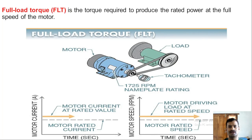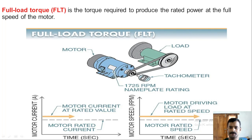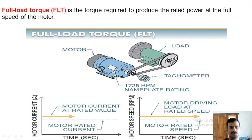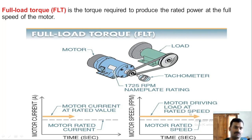Full load torque is the torque required to run the motor at rated power and rated speed. The graph shows motor current and motor speed both at their rated values — a constant, steady-state condition. When the motor is driving the load at rated speed with rated current flowing, the torque being produced at that time is called full load torque.